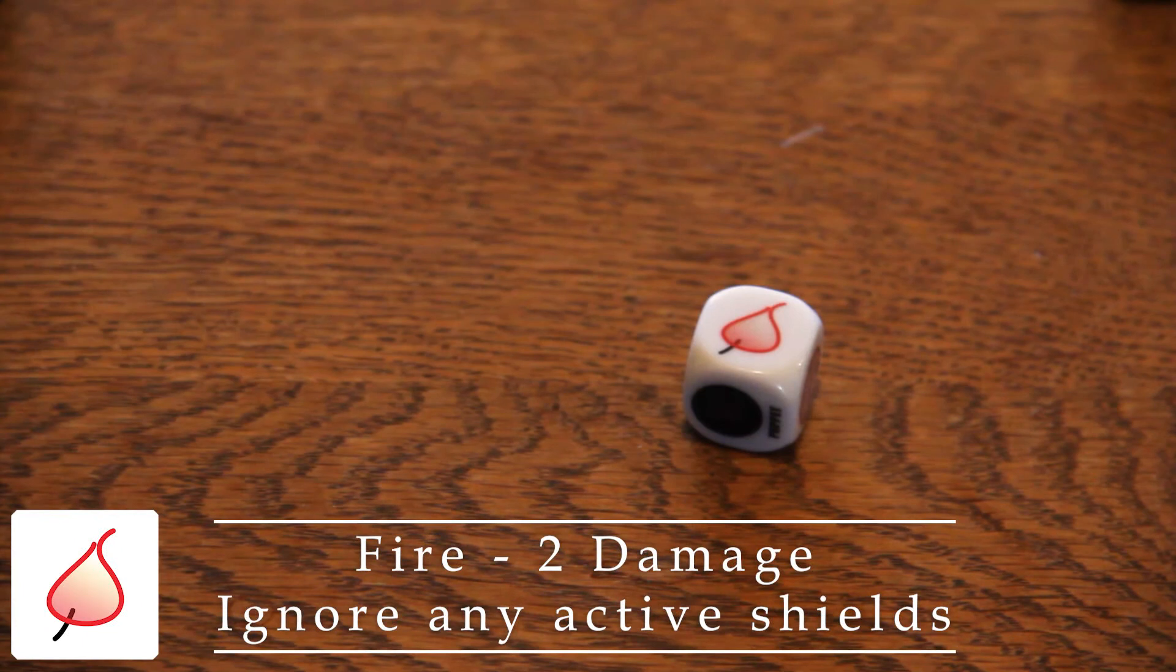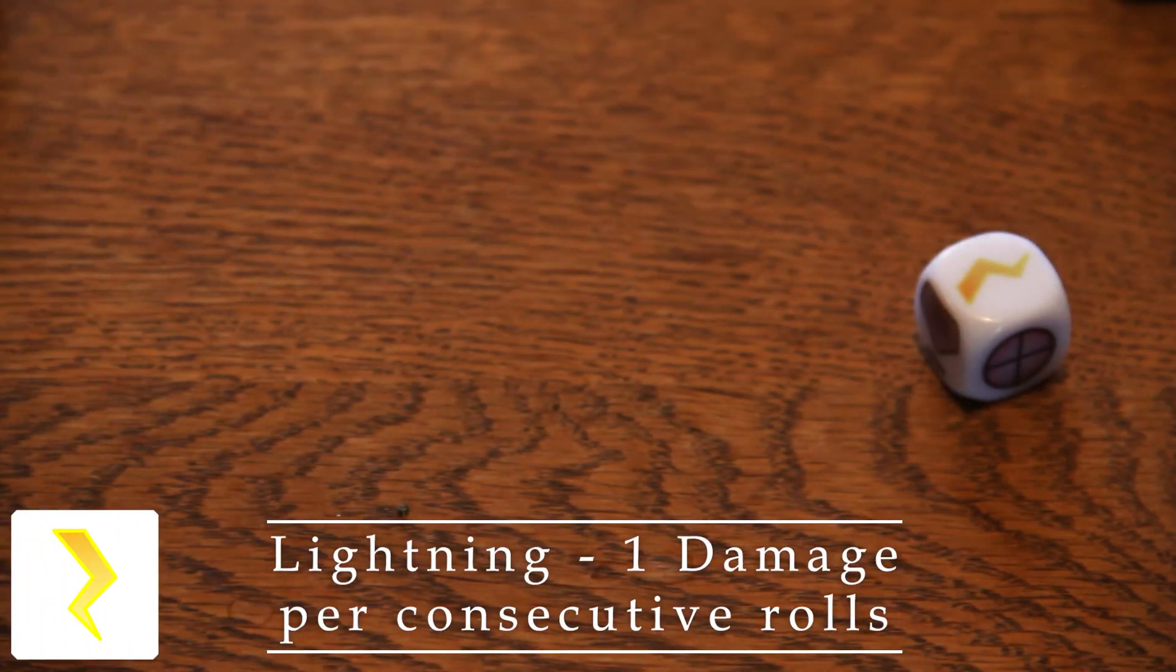Fire deals 2 damage and ignores any active shields. Lightning deals 1 damage to start, then continue rolling this die until you roll something other than lightning. Deal damage equal to the number of consecutive lightnings rolled. Ignore the final non-lightning result.